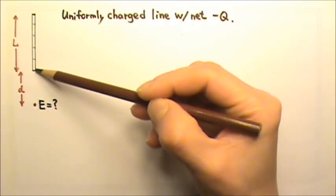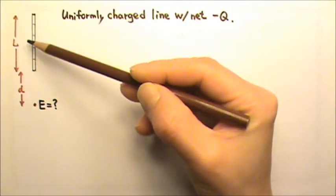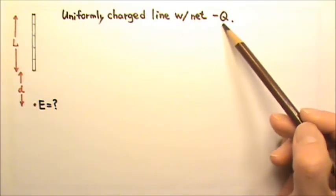What is the electric field at distance d from the end of this uniformly charged line? The line has a length L and a net charge of negative Q.